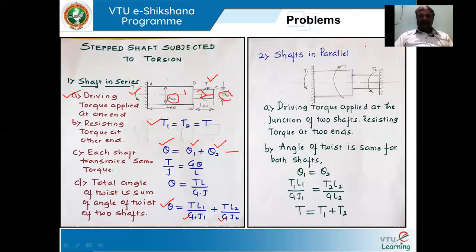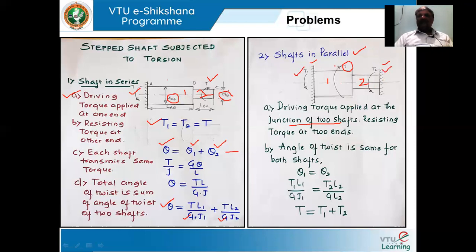Now let us see the second arrangement — shafts in parallel. When do we say shafts are in parallel? Both ends of the shaft are fixed. There are two steps: step one (AB) and step two (BC). Both ends are fixed. Now if the torque is applied at the interface — that is, at the junction of the two shafts — a resisting torque develops at one end and another resisting torque at the other end, both in the anti-clockwise direction opposing the clockwise driving torque.